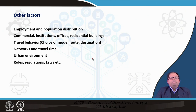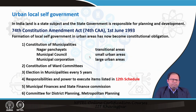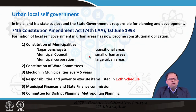Coming to the different laws, regulations, and rules in place in India, I would like to start with the 74th Constitutional Amendment, which is a very important act for urban planning. In India, land is basically a state subject — meaning the state government is responsible for all sorts of planning and development. The 74th Constitutional Amendment was enacted to give more powers to local municipal bodies or local governments so that they can take their own decisions. With its enactment, formation of local self-government in urban areas also became a constitutional obligation.